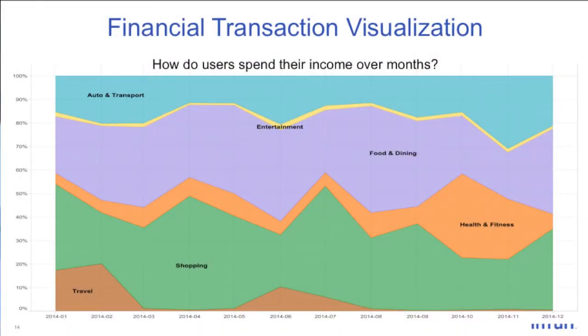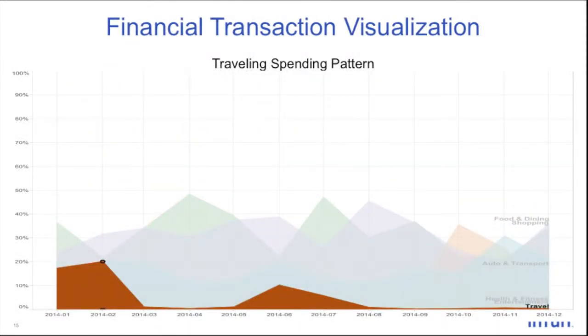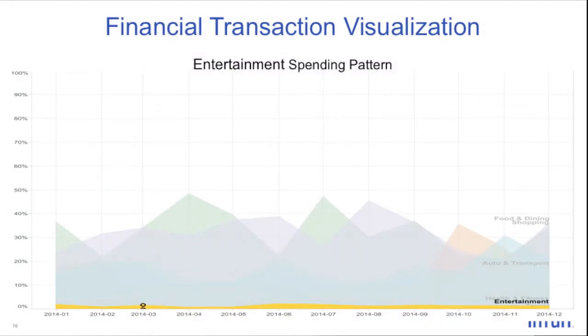The first is the time series visualization, showing how users spent their income last year. We can easily see that users spend most of their income on food and dining and shopping. For the travel category, we can guess this might be a student who spent more money in January, February, and June — winter and summer vacations. But if you look at entertainment, the trend is very consistent throughout the year, which makes sense since many people have subscriptions for newspapers, magazines, and Netflix. By using time series analysis, we can get a better view of how our users behave.